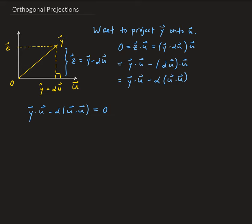From here, we can solve for alpha. Alpha is just going to be y dotted with u. We move that over, and then that's going to cancel out with this negative here, and then divide by u dotted with u dotted with itself. So this is the scalar that we need to do our projection.